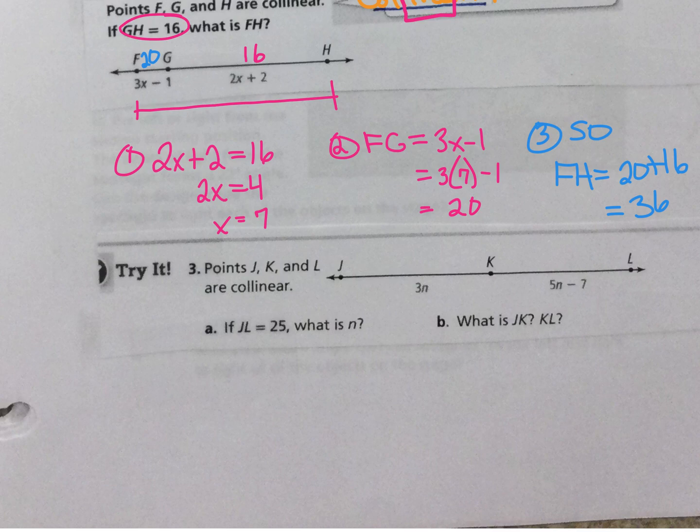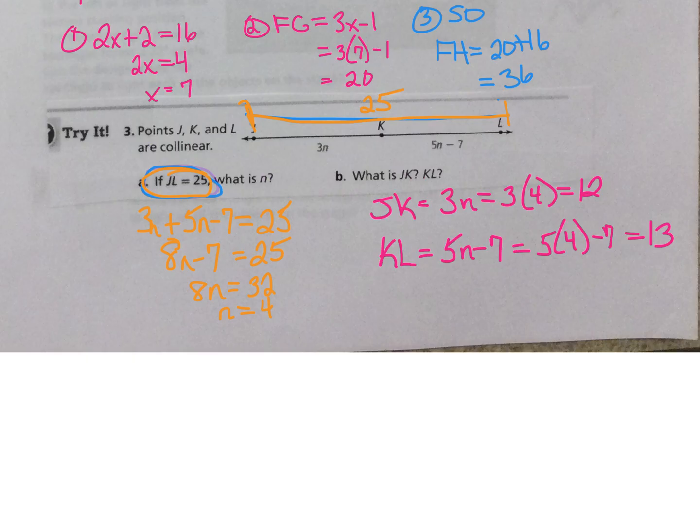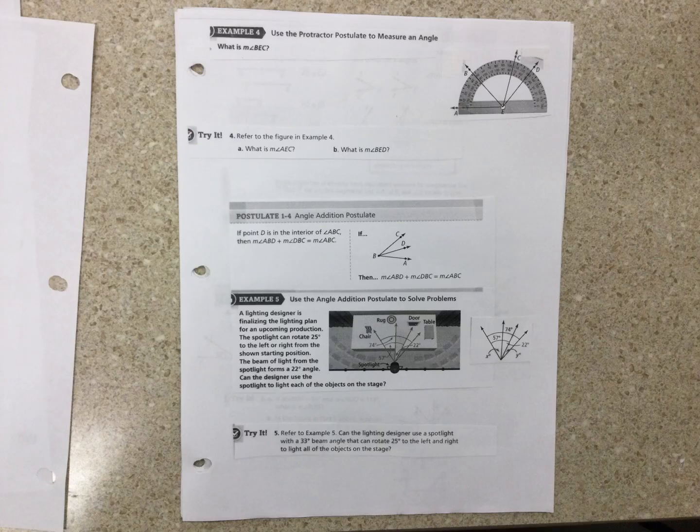All right, now I want you to try it and then come back and see if you figured it out, right? Okay, so if you see here it told us JL equals 25, so I drew that on this line and said 25. So it says what is N? So I know that this plus this has to equal 25 and I solved for N and then I just plugged in N equals 4 to both of those and got my answers.